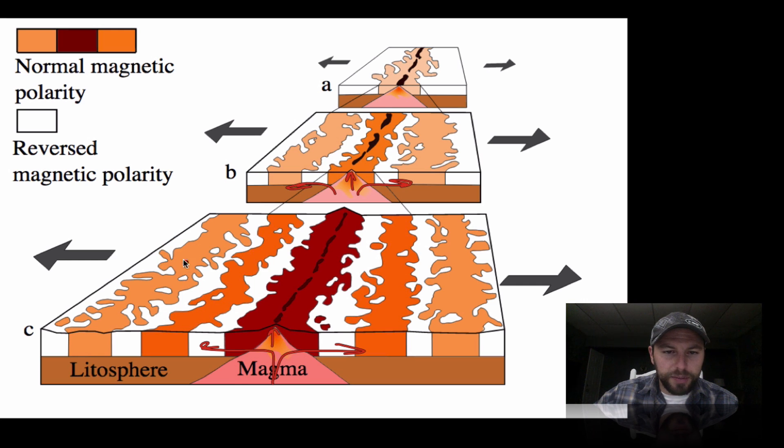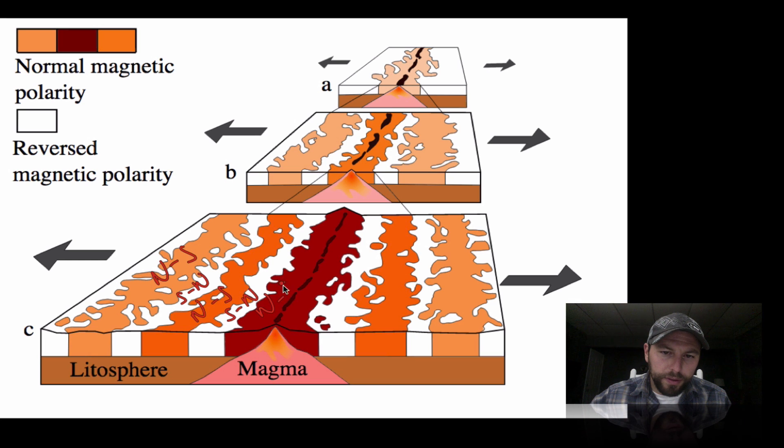Notice that the patterns are equal. This might be north-south, this might be south-north, and the pattern continues on and on. This pattern that we see is evidence for seafloor spreading or divergent plate boundaries.